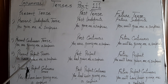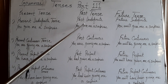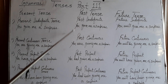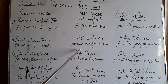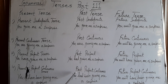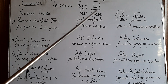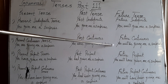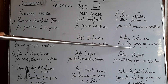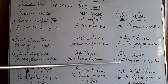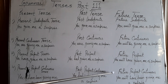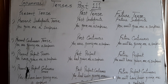Full tense recap using one sentence: you have given me a surprise (present perfect); you have been giving me a surprise (present perfect continuous); you gave me a surprise (past); you were giving me a surprise (past continuous); you had given me a surprise (past perfect); you had been giving me a surprise (past perfect continuous); you will give me a surprise (future indefinite); you will be giving me a surprise (future continuous); you will have given me a surprise (future perfect); you will have been giving me a surprise (future perfect continuous).